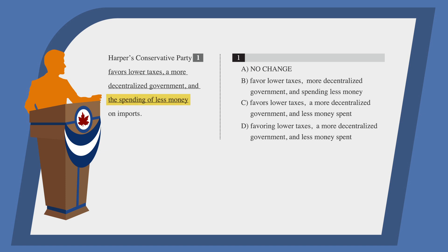The third item, the spending of less money, is currently a present participle, but should be expressed in the same way as the first two. So answer choice A, no change, is incorrect. Looking at our answer choices, we can eliminate B because it changes the verb form from "favors" to "favor." The correct form is "Harper's Conservative Party favors," not "Harper's Conservative Party favor." While this isn't part of the parallel structure we need to fix, we need to watch out for tempting answer choices that may fix the problem at hand but create another grammatical error in the process.